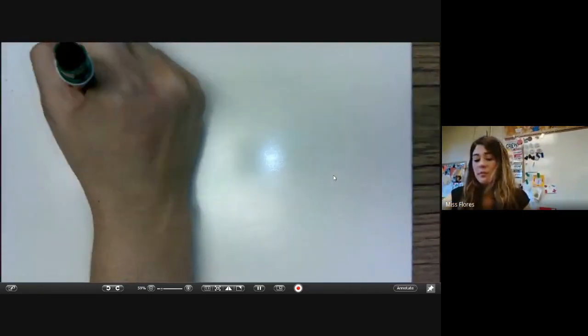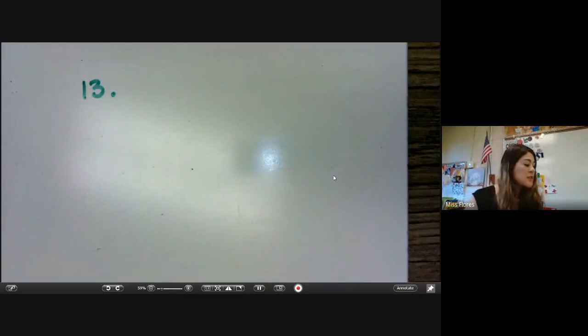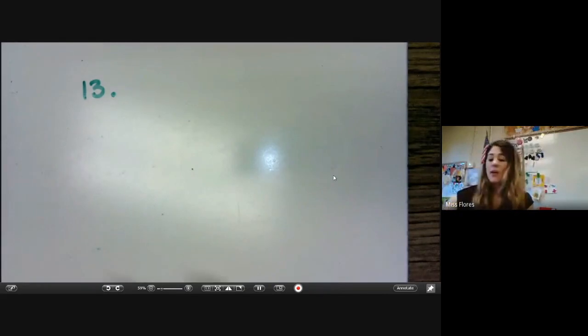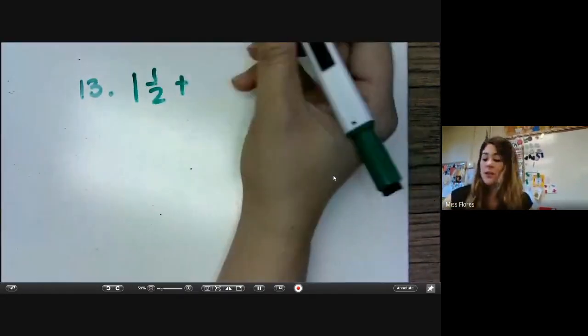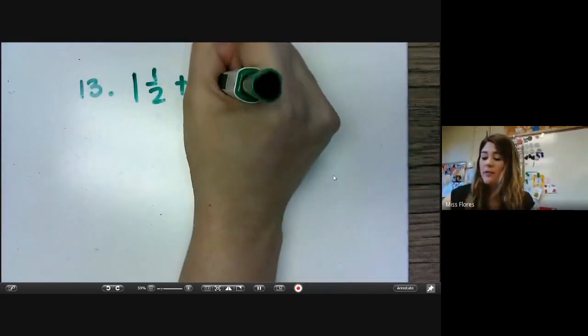Let's do number 13. It says, on Saturday, Jacinda played outside for one and a half hours and played board games for two and a half hours. Altogether, how much time did Jacinda spend playing outside and playing board games? So what you need to do is you need to add. So we're going to add one and one-half plus two and a half.